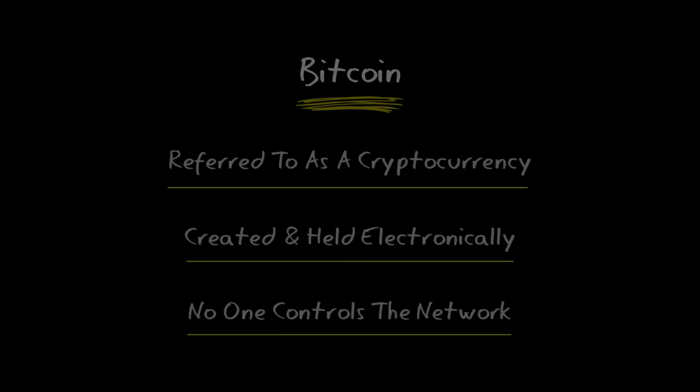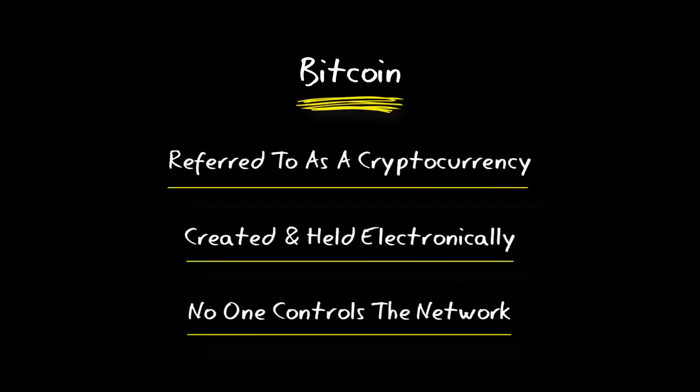Bitcoin is a form of digital currency, more often than not referred to as a cryptocurrency. It's created and held electronically, and on top of that, no one single person controls the Bitcoin network.